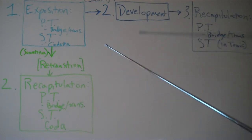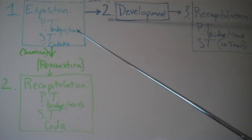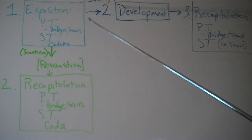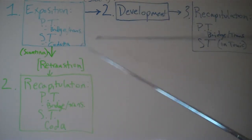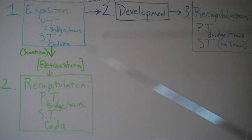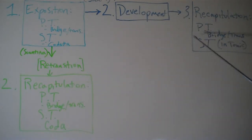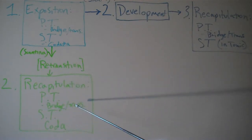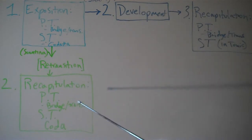A slight difference is that the principal theme is a little bit smaller in scope for the sonatina. But then in the recapitulation, we have both principal theme and subordinate theme in the tonic, followed by a modified bridge or transition — a little bit embellished perhaps from the exposition — and then an optional coda.